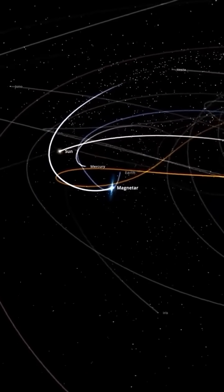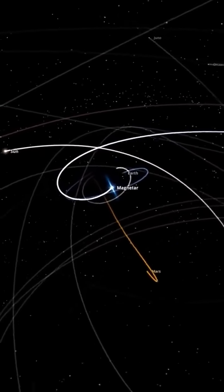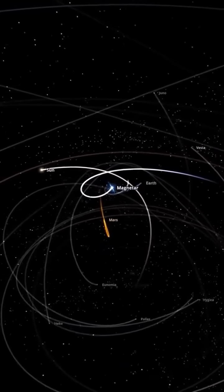Even the sun would feel the effects. The magnetar could strip away its outer layers, triggering massive solar flares and more instability in the solar system.